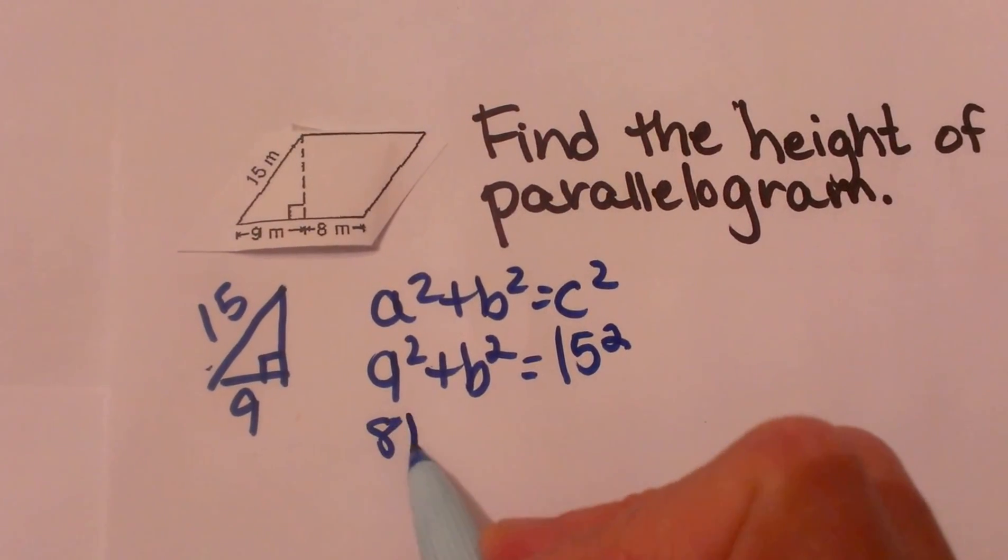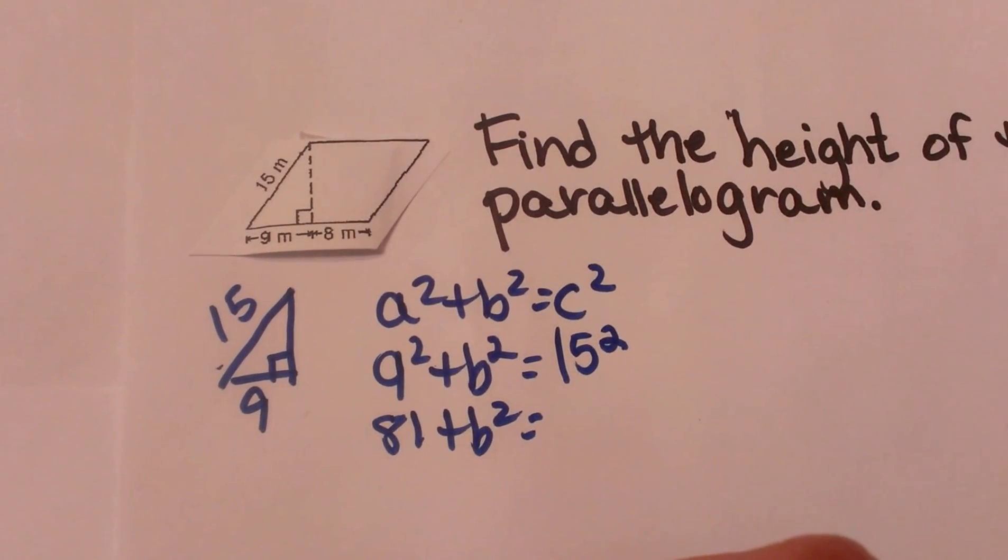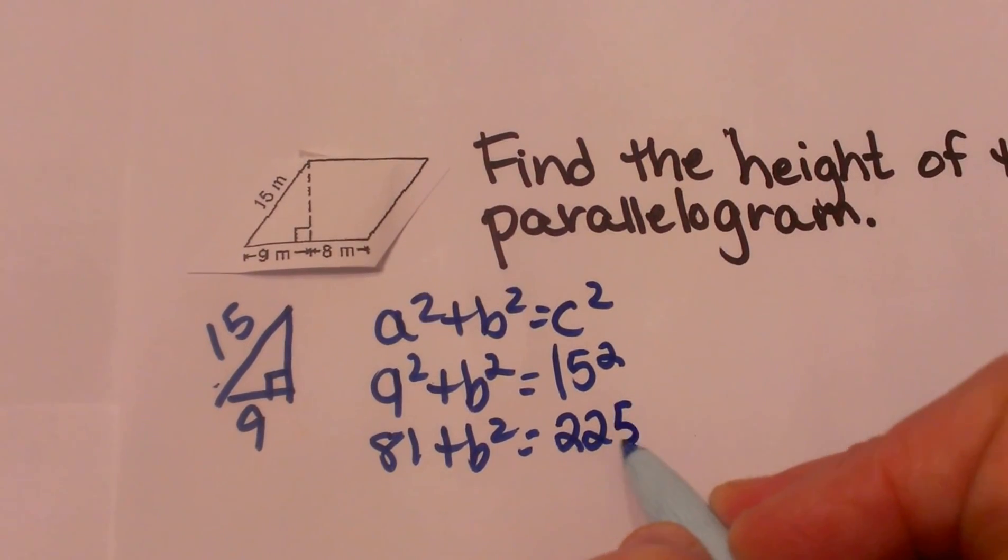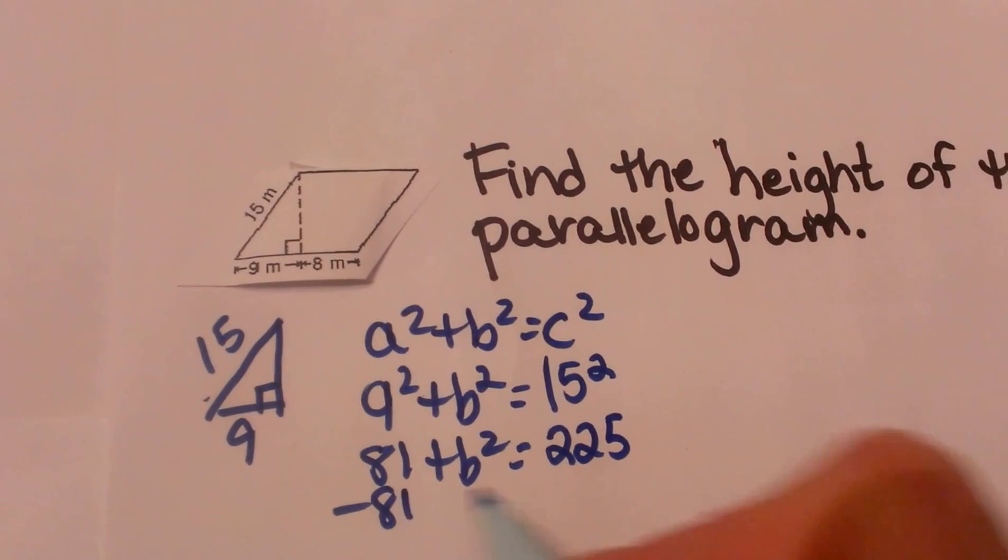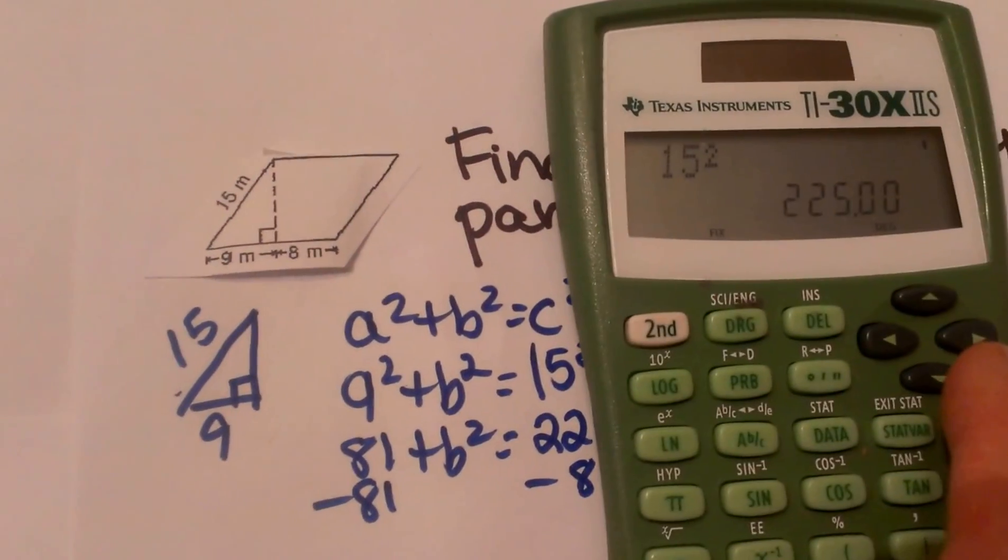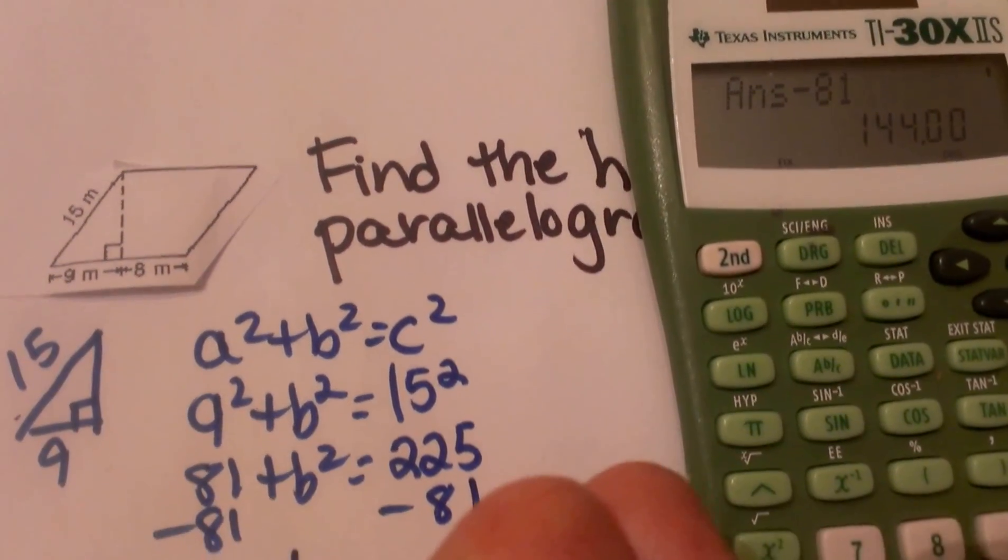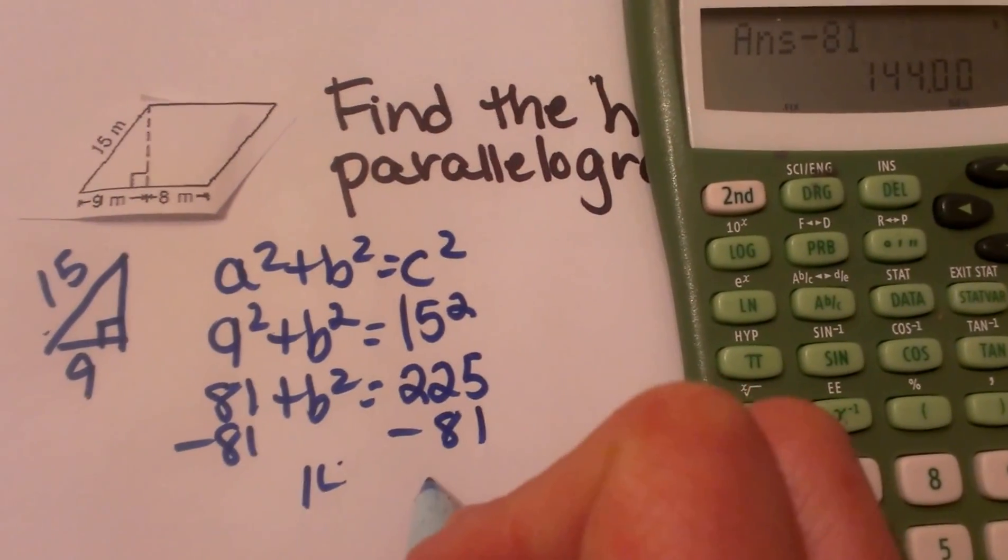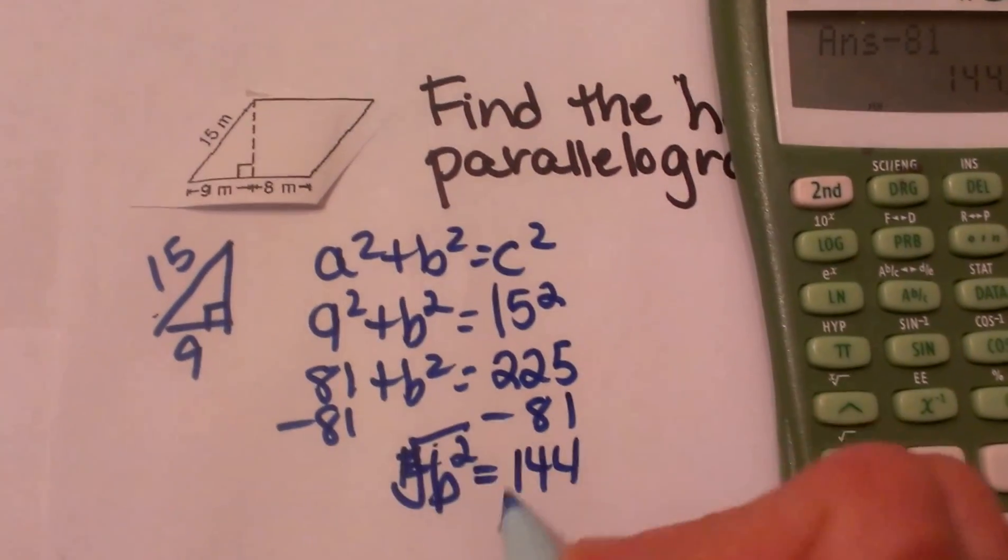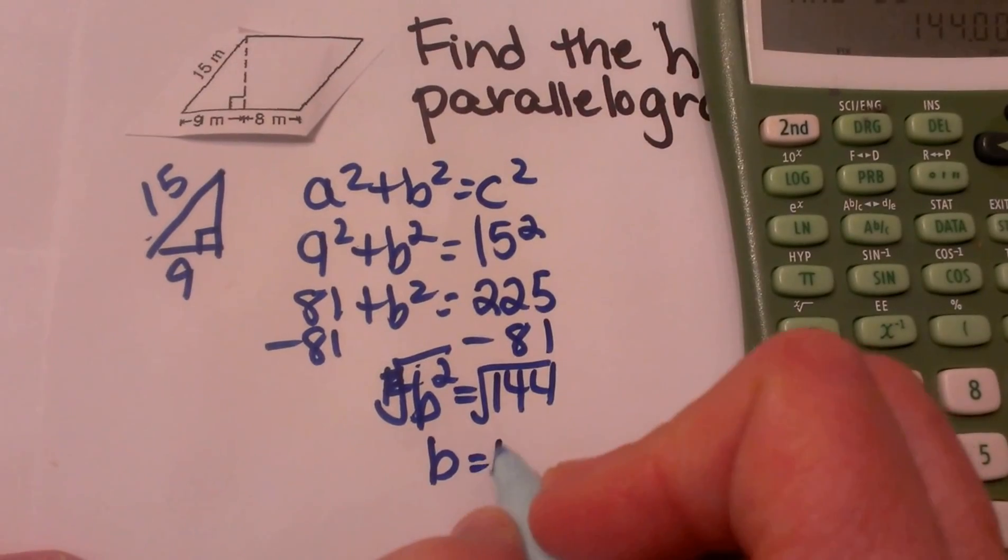Well 9 squared is 81 plus b squared equals 15 squared. Let's see, I'm going to double check. 15 squared is 225 and then to solve for b squared I'm going to subtract 81. So let's take our calculator and take our 225 minus 81 and we get 144. So 144 equals b squared. Take the square root of both sides and 144 is a perfect square so b equals 12.